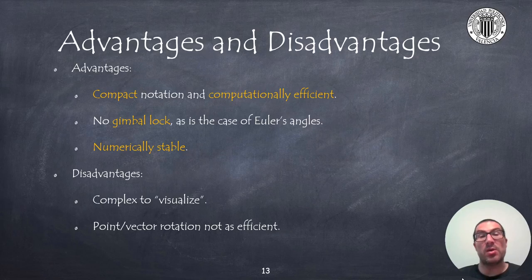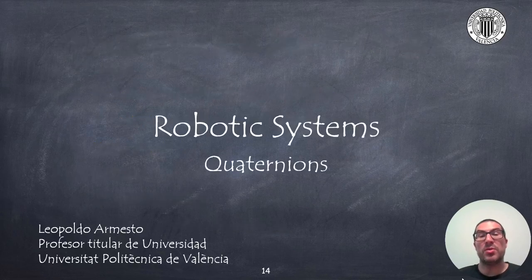Therefore, as a conclusion, we can say that quaternions are more compact and computationally more efficient. Furthermore, they do not present the gimbal lock problem as is the case with Euler angles, and they are numerically more stable. As disadvantages, quaternions are more complex to visualize, and the rotation of a point is computationally more expensive compared to the use of rotation matrices. In this video, we have introduced quaternions, seen their main properties and operators, and analyzed the advantages and disadvantages of their use compared to rotation matrices. Thank you very much.